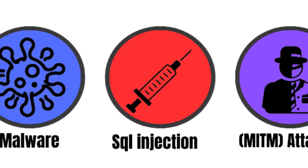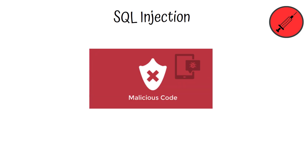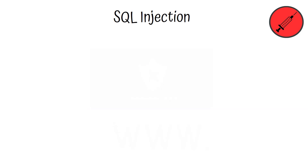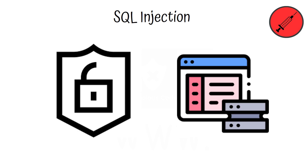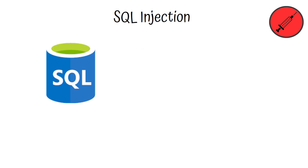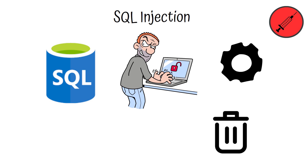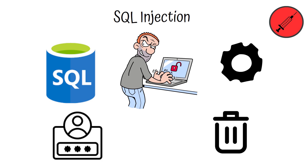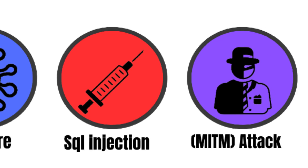SQL injection involves inserting malicious code into a web form or URL to exploit a vulnerability in a website's database. By manipulating the SQL query, hackers can access, modify, or delete sensitive information stored in the database, such as user credentials or payment details.